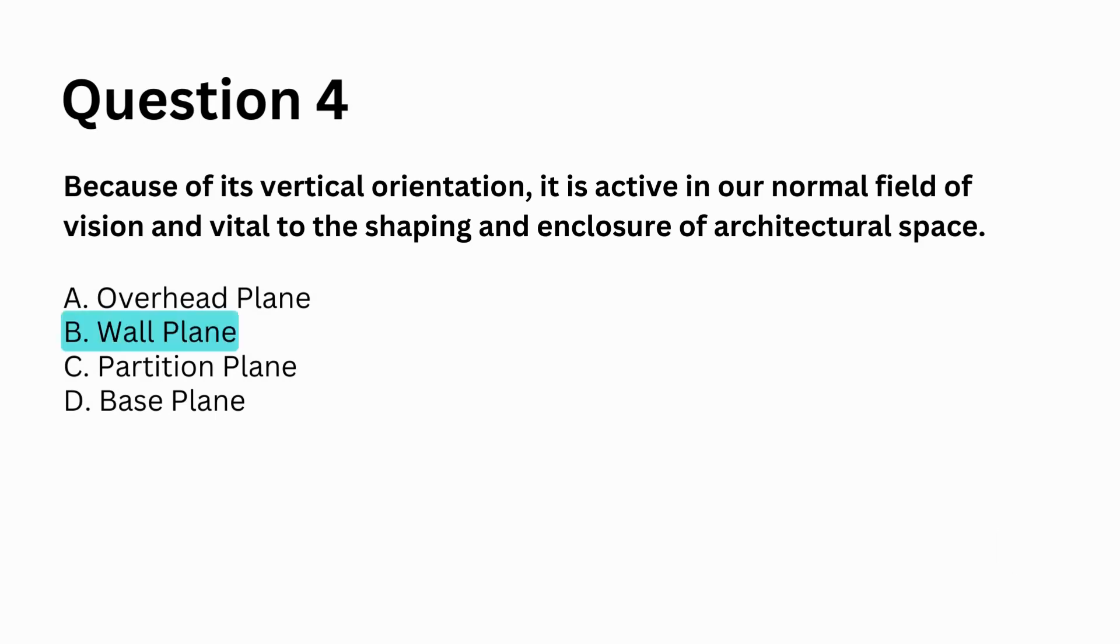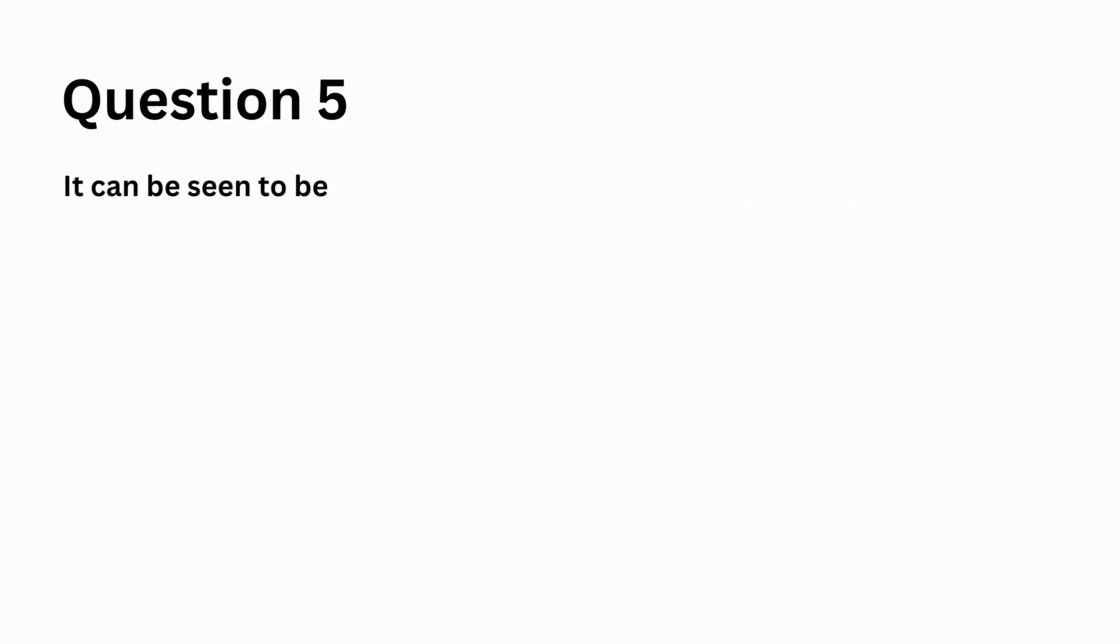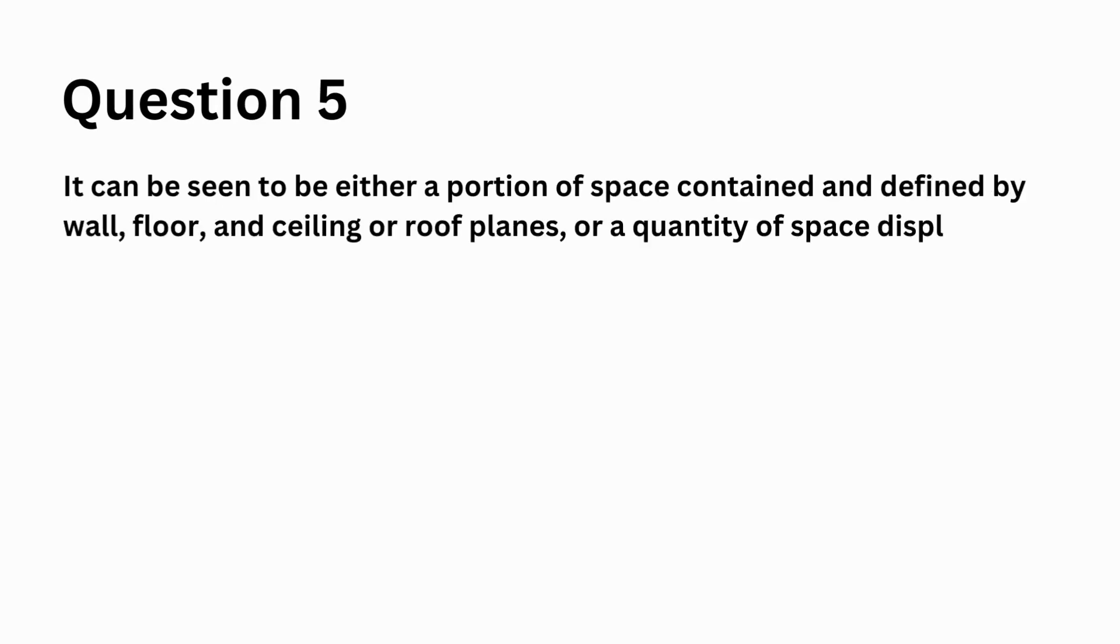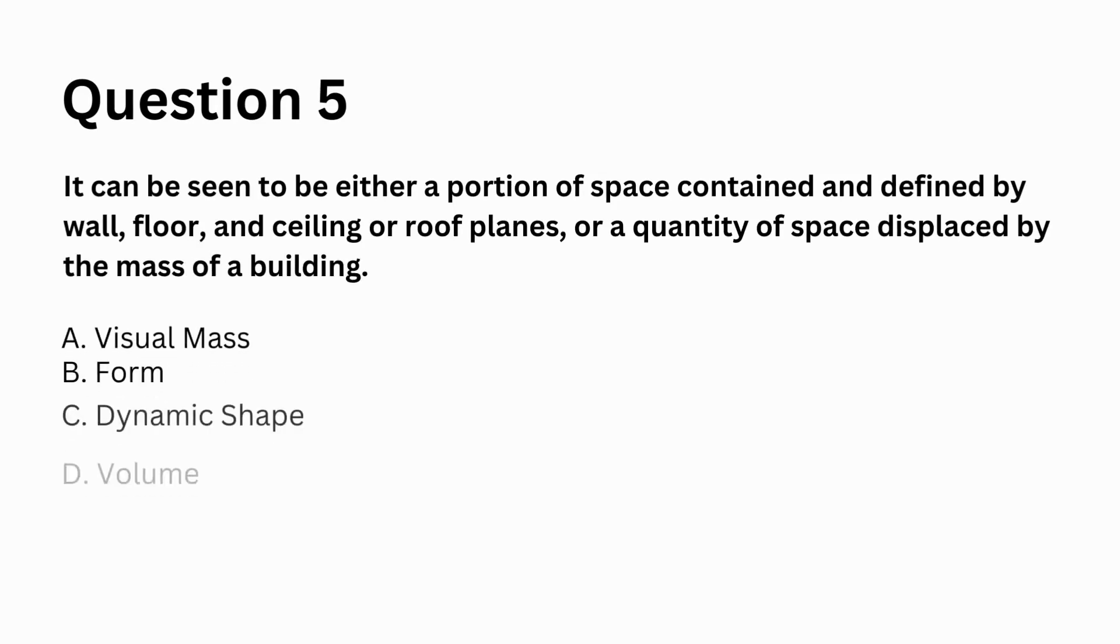B. wall plane. It can be seen to be either a portion of space contained and defined by wall, floor, and ceiling or roof planes, or a quantity of space displaced by the mass of a building. A. visual mass, B. form, C. dynamic shape, D. volume. Answer: D. volume.